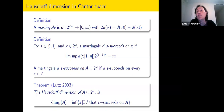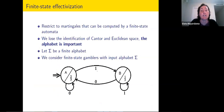This characterization very naturally calls for an effective version. If we ask these gambling devices — the martingale — to be computable in a certain setting, it will give us a generalization of this notion that will probably give larger values than classical Hausdorff dimension, and will be more useful in more restrictive settings. Today I want to look at finite state effectivization, restricting to martingales that can be computed by a finite state automaton.